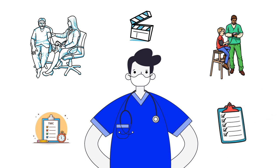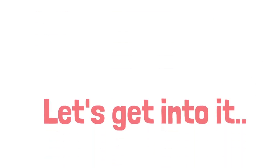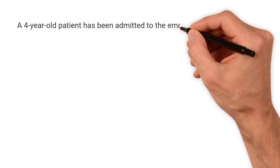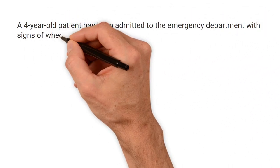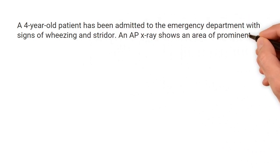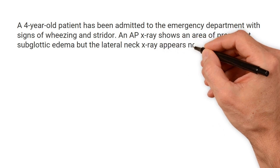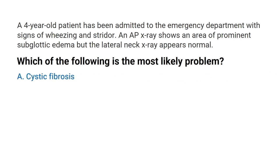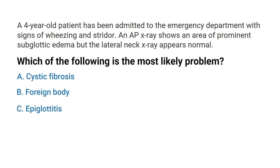A four-year-old patient has been admitted to the emergency department with signs of wheezing and stridor. An AP x-ray shows an area of prominent subglottic edema, but the lateral neck x-ray appears normal. Which of the following is the most likely problem? A) Cystic fibrosis, B) Foreign body, C) Epiglottitis, or D) Croup?